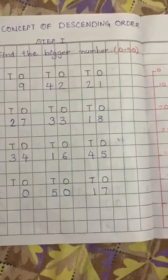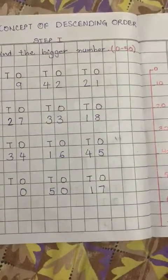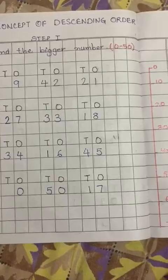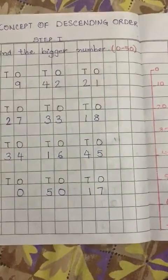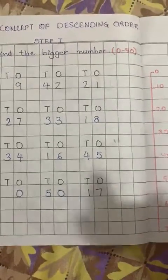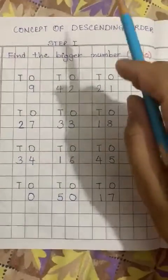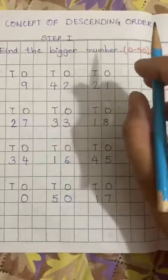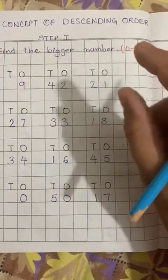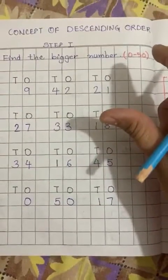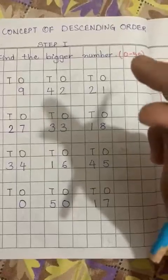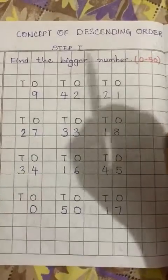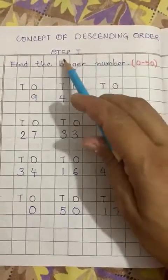Earlier we have learned the concept of ascending order, where we have to write the numbers from small number to the big. So now it is the concept of descending order. Descending order means that we have to first find the big number. We have to find that number and write it first. But before arranging the numbers in descending order, we are going to learn the concept of descending order step 1.